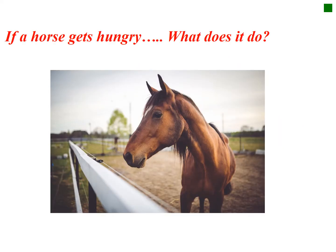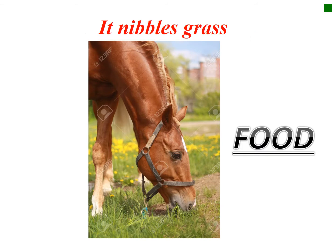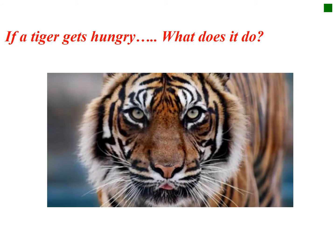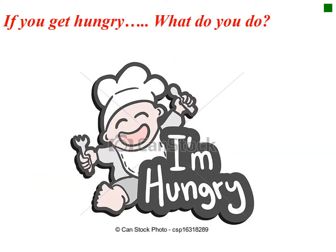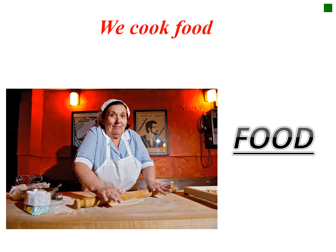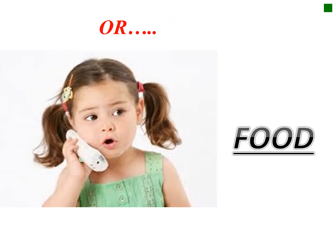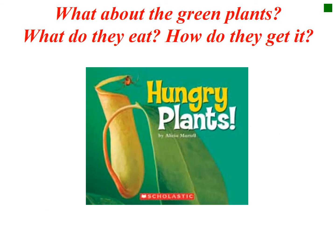If a horse gets hungry, what does it do? It's going to nibble grass to find food. If a tiger gets hungry, it's going to hunt a prey. If a human gets hungry, you're going to cook food or order food. So what about green plants — what do they eat and how do they get their food?